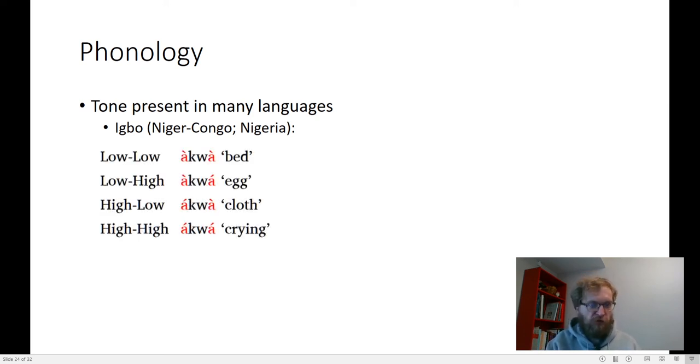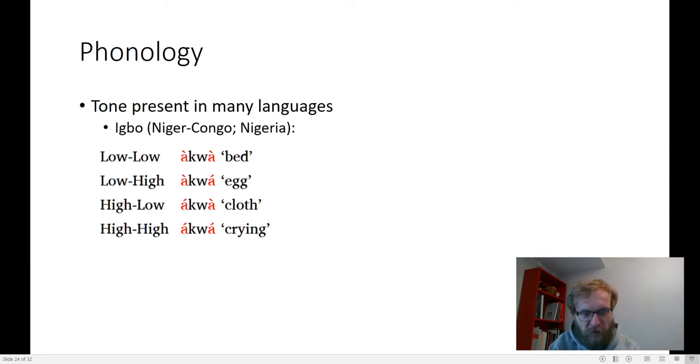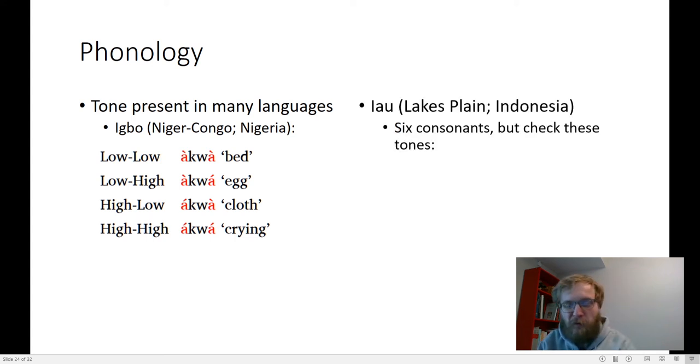Igbo has a wonderful simple kind of tone system, where if you get the acute accent going up is the high tone, and the kind of other accent going down is the low tone. So if you get low-low on this form, aqua, it means bed. If you get low-high, it's egg. If it's high-low, it's cloth. If it's high-high, it's crying. The joke among phonologists is there's four words, aqua, and none of them mean water. We don't have very many jokes, that's the best joke we have.